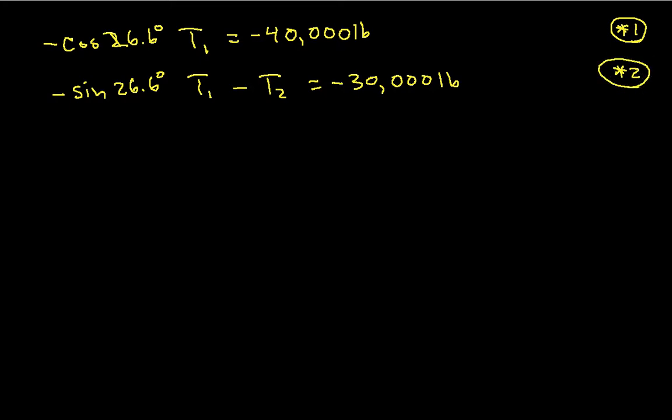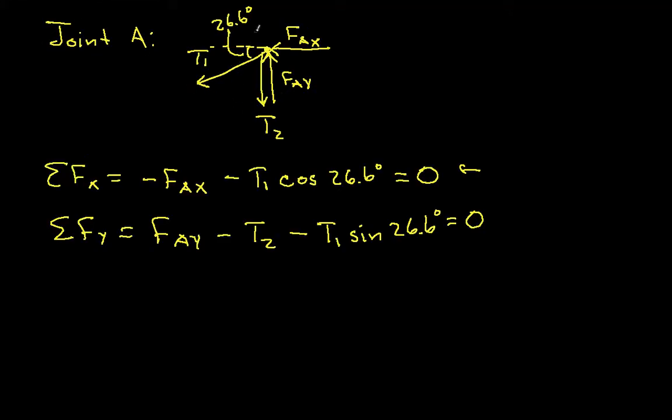Okay. So again, where these equations come from is, I look at this, I got this free body diagram of the pin, wrote these guys out, and I plugged in the numbers I know for FAX and FAY. I've done a little bit of rearranging. Okay, so that's joint A. We only have six more joints to go.